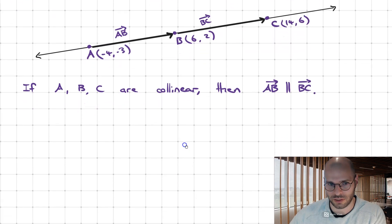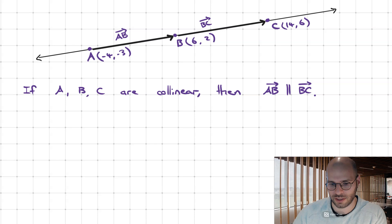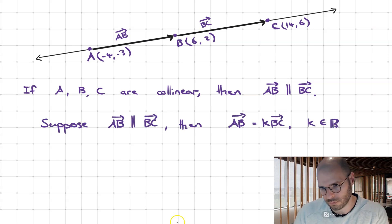Using our knowledge from the previous lesson, we can build the following argument. Vector AB will be a scalar multiple of BC, where the scalar multiple is a real number and non-zero.